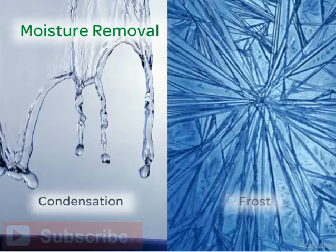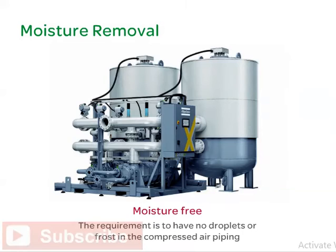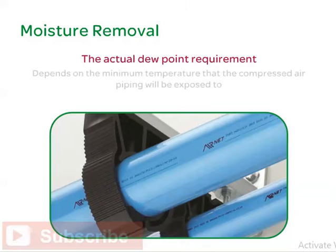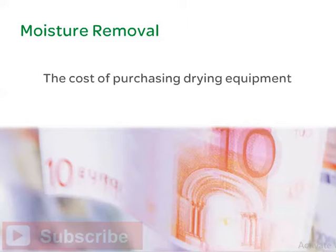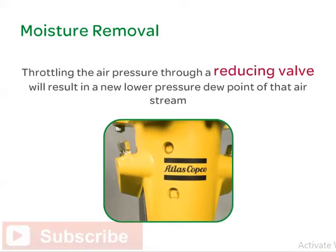Typically, compressed air must be dried because the equipment that relies on compressed air needs to be moisture-free. Moisture-free can have many definitions, but generally the actual requirement is to have no droplets or frost in the compressed air piping. The actual dew point requirement normally depends on the minimum temperature that the compressed air piping will be exposed to, but there can be process requirements for dry air too. The level of dryness required has a direct impact on the cost of purchasing drying equipment and the cost of drying the air. Throttling the air pressure through a reducing valve will result in a new, lower pressure dew point of that airstream.